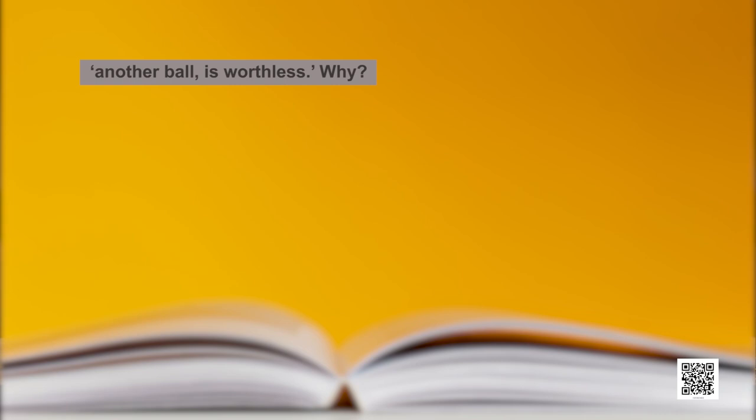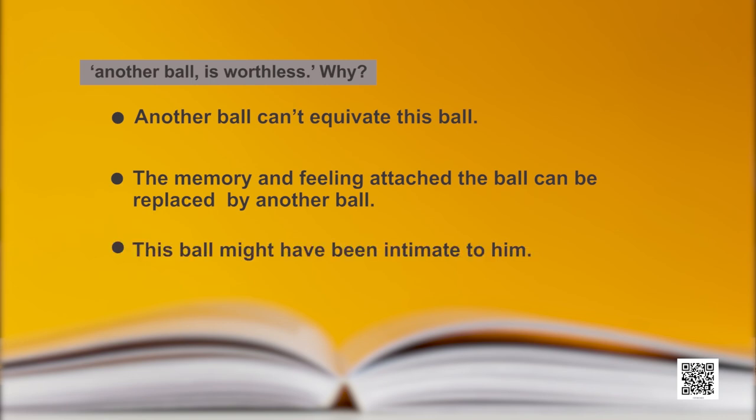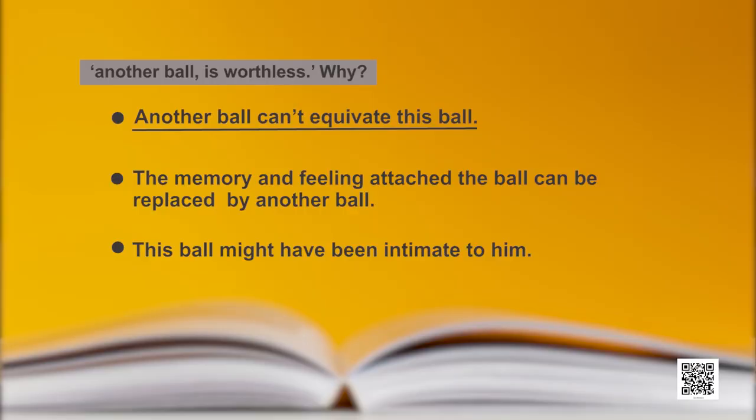Question six: Why is another ball worthless? Options: A — another ball cannot equate this ball; B — the memory and feeling attached to the ball cannot be replaced by another ball; C — this ball might have been intimate to him. If forced to choose one, Kriti would go for A — another ball cannot equate this ball — but all options fit the situation. Option B also works: the memory and feeling attached to the ball cannot be replaced by another ball.